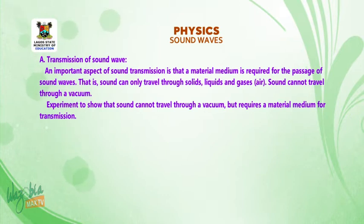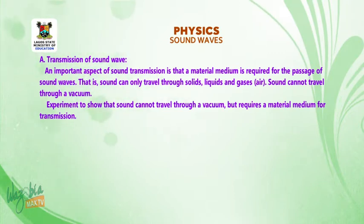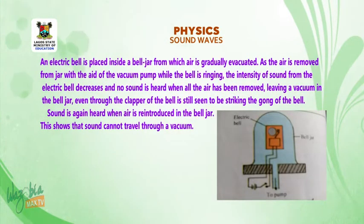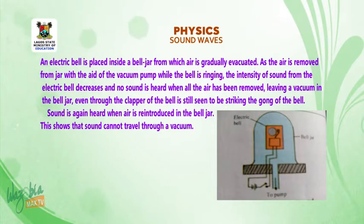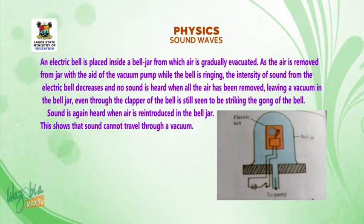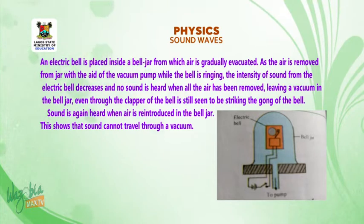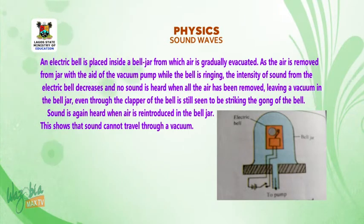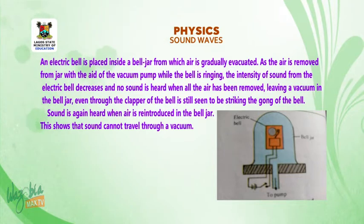Let's look at an experiment to show that sound cannot travel through a vacuum but requires a material medium for transmission. An electric bell is placed inside a bell jar from which air is gradually evacuated. As the air is removed from the jar with the aid of the vacuum pump while the bell is ringing, the intensity of sound from the electric bell decreases. No sound is heard when all the air has been removed, leaving a vacuum in the bell jar, even though the clapper of the bell is still seen to be striking the gong of the bell. Sound is again heard when air is reintroduced in the bell jar. This shows that sound cannot travel through a vacuum.